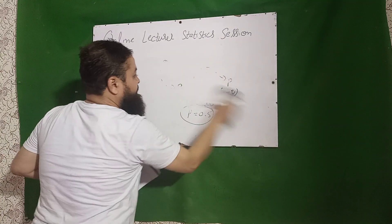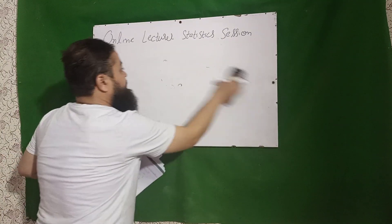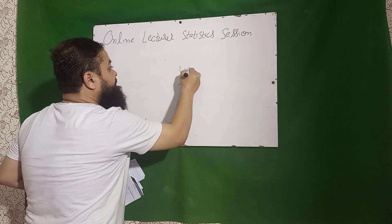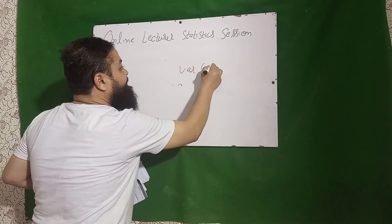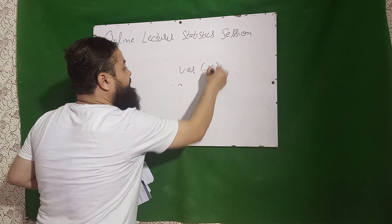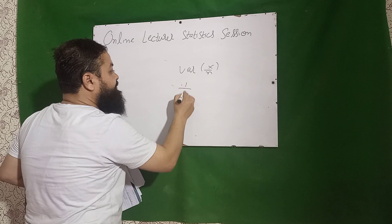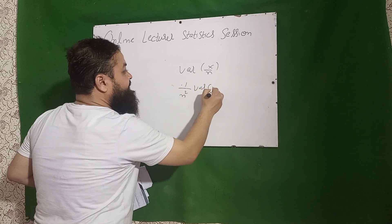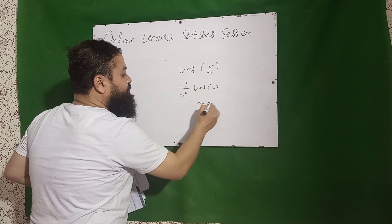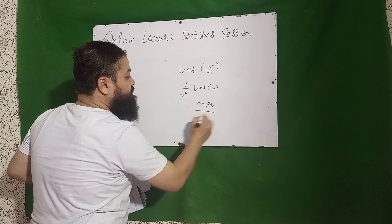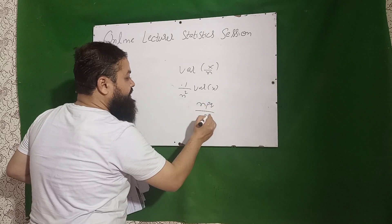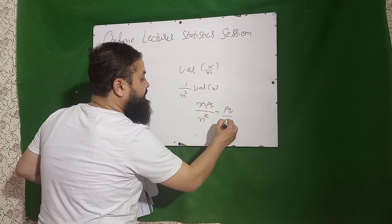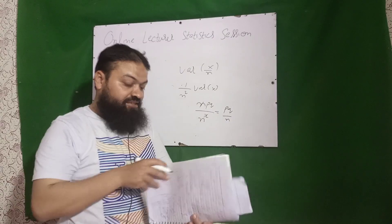Next question: in binomial distribution, what is the variance of X over n? We know it is 1 over n² times the variance of X, which is NPQ over n². The n's cancel, giving PQ over n as the correct option.